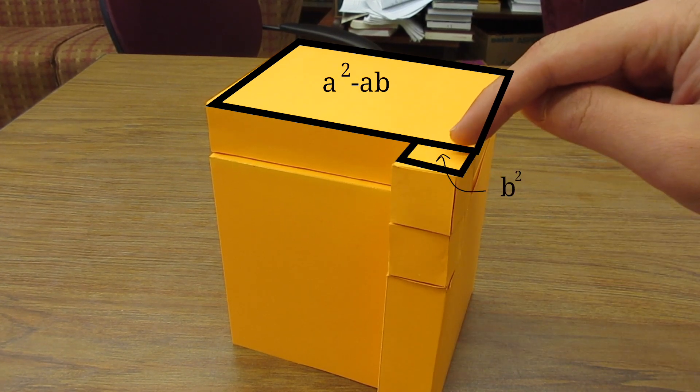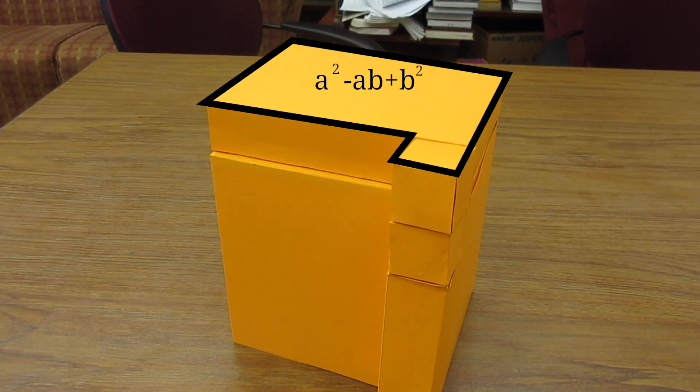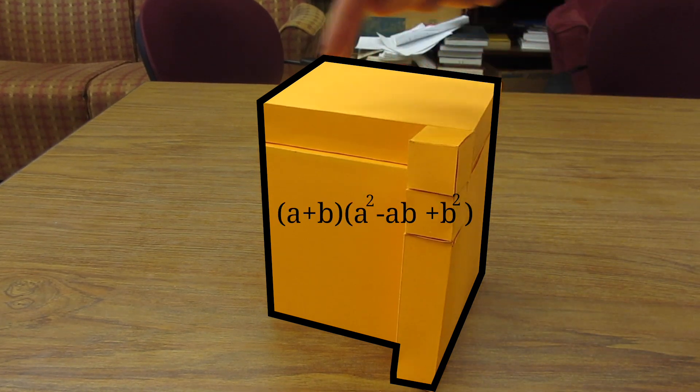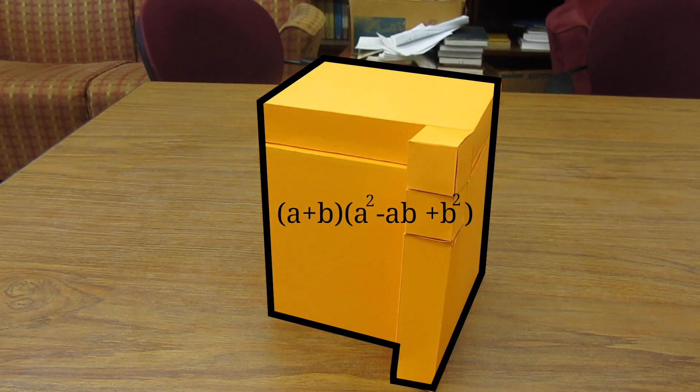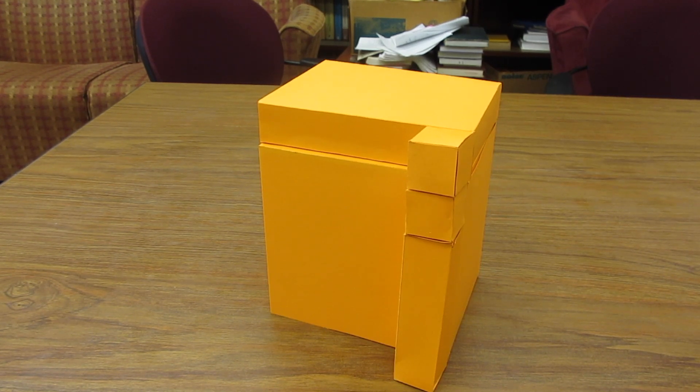So the big part here has the area of a times (a - b), which is a² - ab. This little small part is b². So the total area of the base is gonna be a² - ab + b². So the total volume is gonna be (a + b) times (a² - ab + b²).